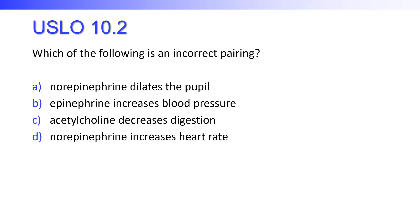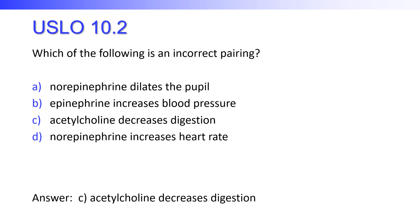Which of the following is an incorrect pairing? Norepinephrine dilates the pupil. Epinephrine increases blood pressure. Acetylcholine decreases digestion. Norepinephrine increases heart rate. All of these are true except for one — hopefully you said C. Acetylcholine actually does increase digestion.